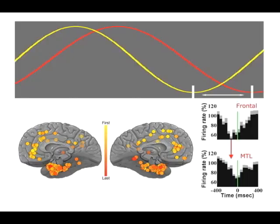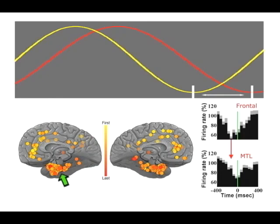Finally, we found that slow waves do not happen exactly at the same time across the brain. Rather, they had a tendency to propagate along typical paths. On average, slow waves and underlying neuronal activity occurred earliest in the frontal lobe, and only about 200 milliseconds later in the temporal lobe, and finally in the hippocampus.